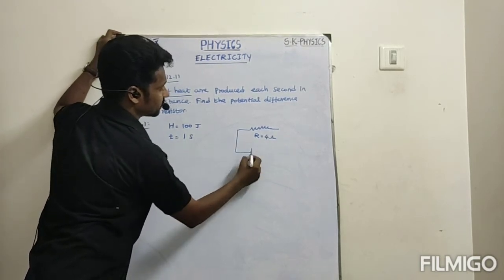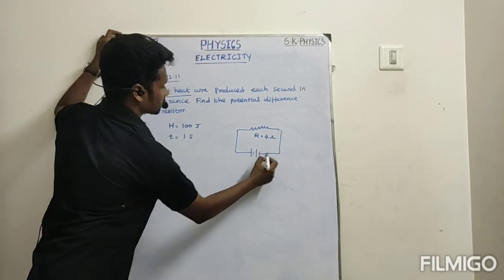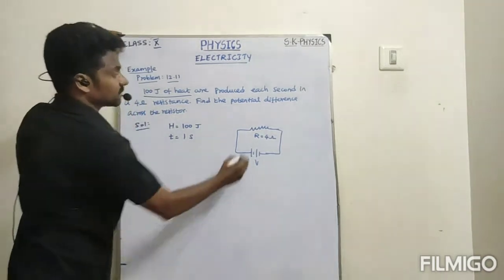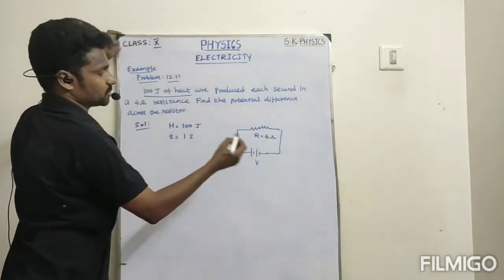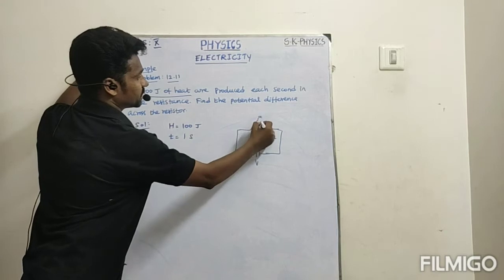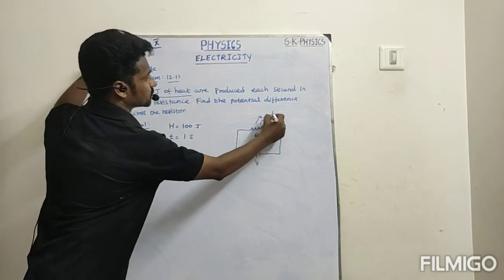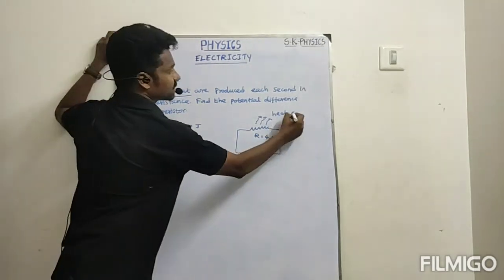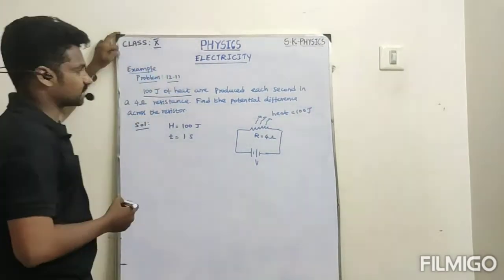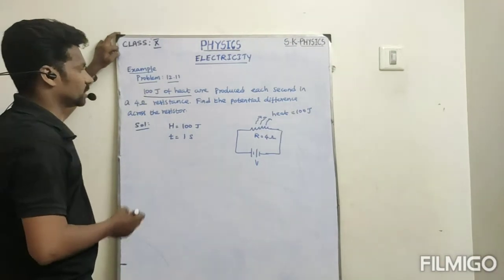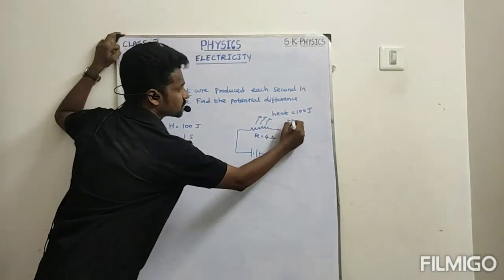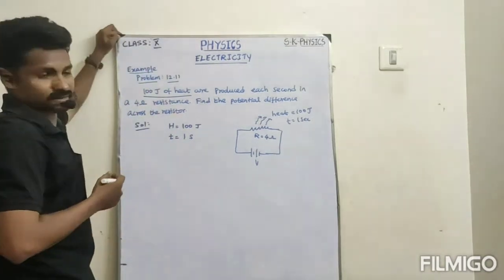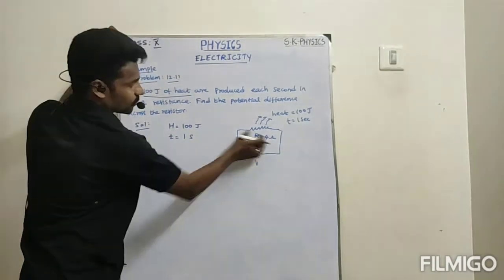It will be connected with the battery source, so the potential is V. This resistance, due to the high value, emits heat. The heat value is given as 100 joules of heat emitted in each second, so time is equal to 1 second. Every second, 100 joules of heat is emitted by the 4 ohm resistor.